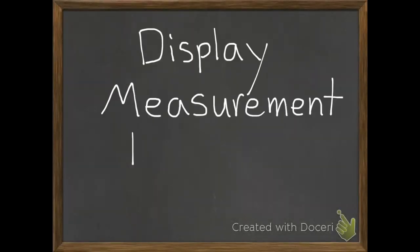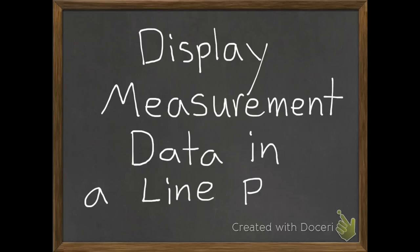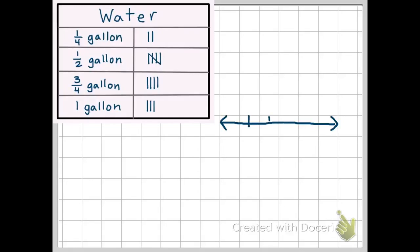Today's lesson is to display measurement data in a line plot. The data I collected was I had a goal to drink one gallon of water every day. I measured how much water I drank each day and collected it in this table on the top left.